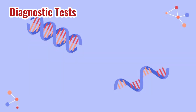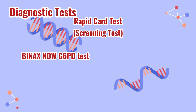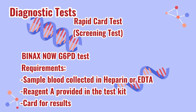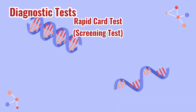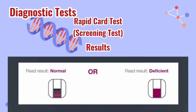The next test is a rather easy one — the rapid card test, also known as the screening test. An example is the BinaxNOW G6PD test. This requires a blood sample collected in heparin or EDTA from a patient, along with Reagent A and a card that provides visual results. The test is performed in three easy steps: first, combine the blood sample and Reagent A; next, mix it; and lastly, drop the mixture onto the card provided. Seal it and wait 10 minutes for results. Multiple layers of color indicate normal blood, while only one color indicates glucose-6-phosphate-deficient blood.